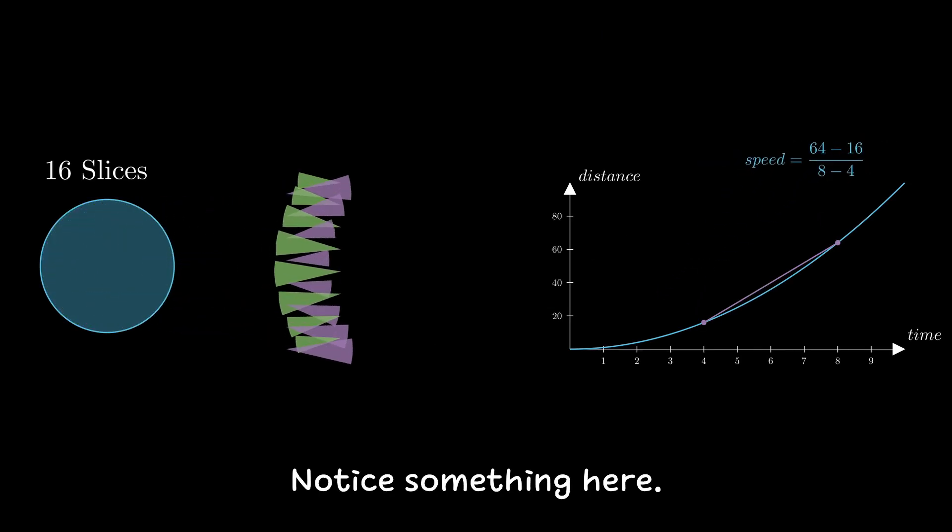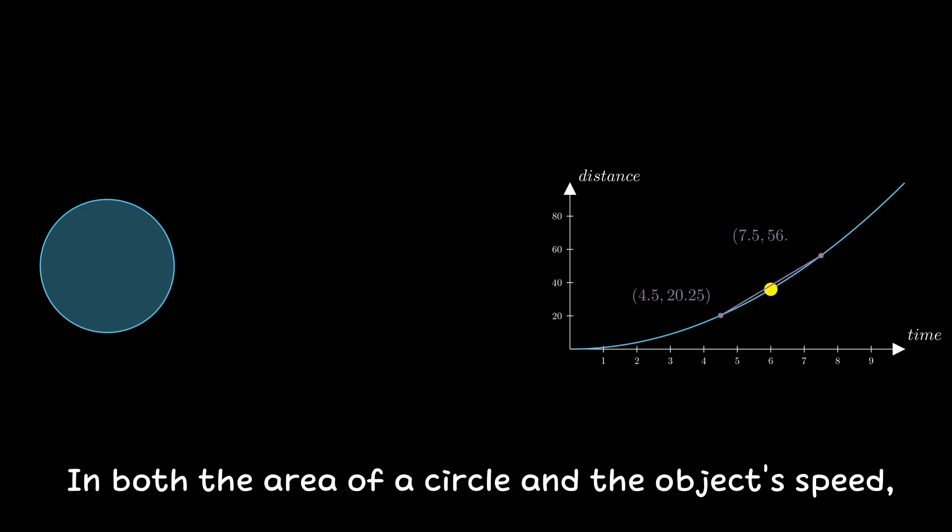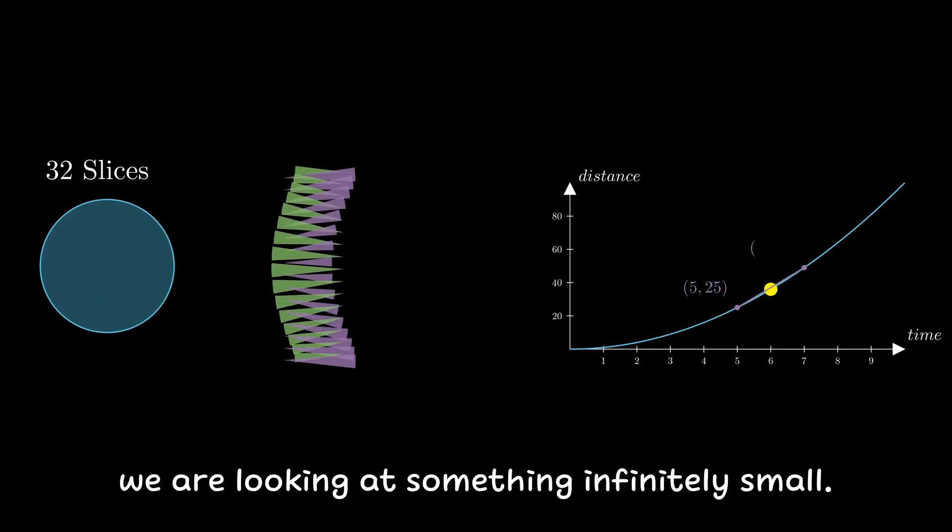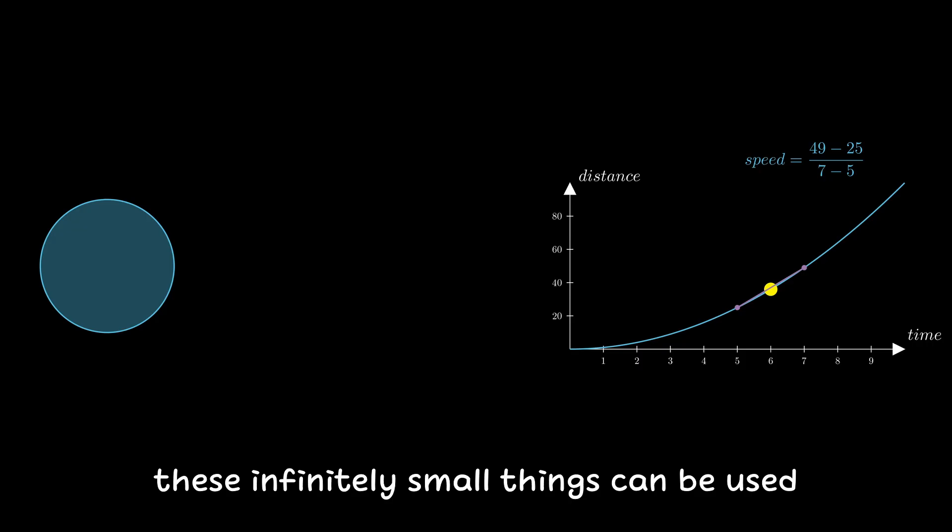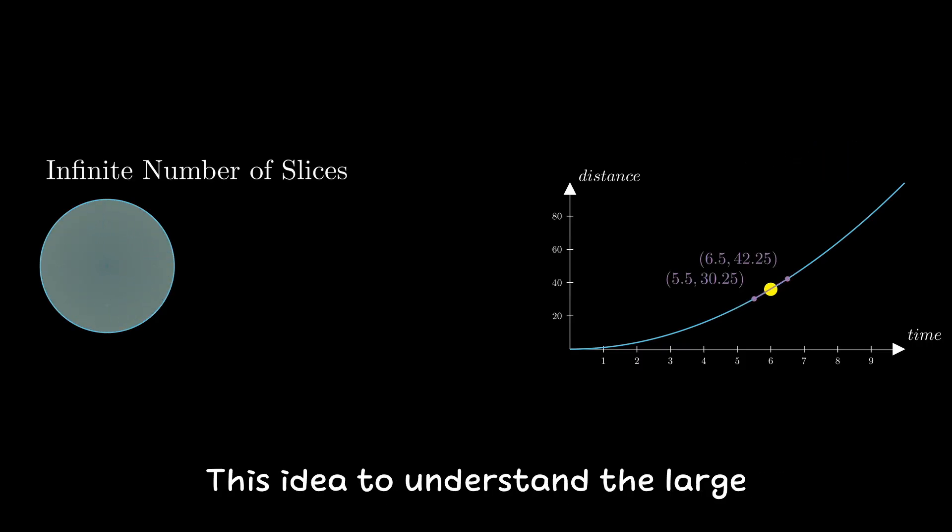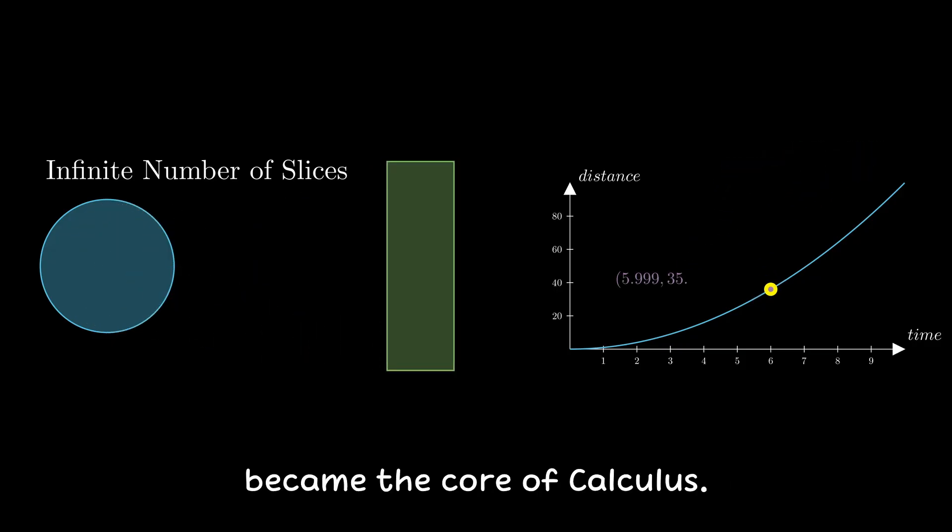Notice something here. In both the area of the circle and the object's speed, there's a hidden similarity. In each case, we are looking at something infinitely small. Yet somehow, these infinitely small things can be used as a powerful tool to understand the world. This idea to understand the large by studying the infinitely small became the core of calculus. But for many centuries, no one has yet to formalize this weird way of doing math.